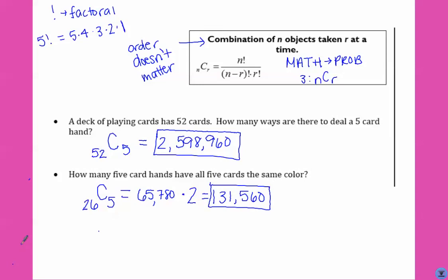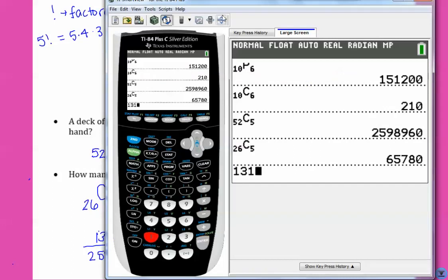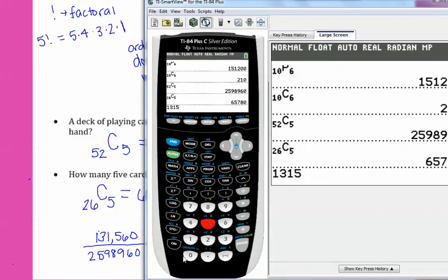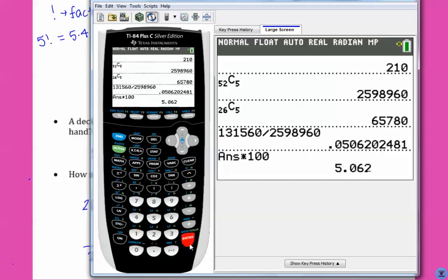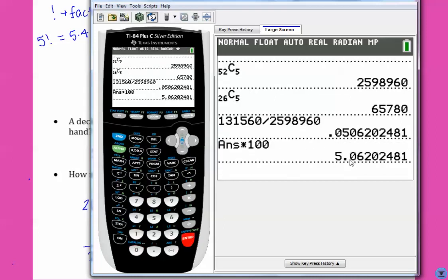Now just for fun, if any of you guys play poker, they're all the same color, that's called a flush, 331,560 out of 2,598,960. This means, we multiply this by 100, you have a 5% chance of getting a flush when you play poker. Those are not very good chances. Don't gamble. The odds are not in your favor.